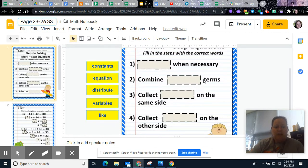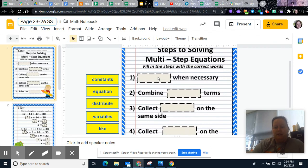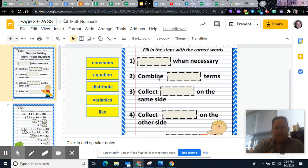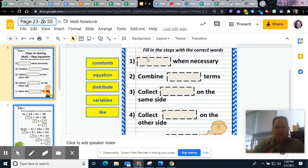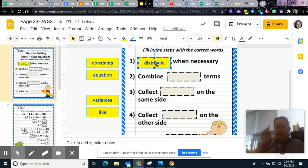This first page is huge. Like this is the page that you're going to want to reference often. So let's make sure we get these in the correct blank. The first thing when you are solving multi-step equations is you want to distribute when necessary. So you're going to use the distributive property when necessary.